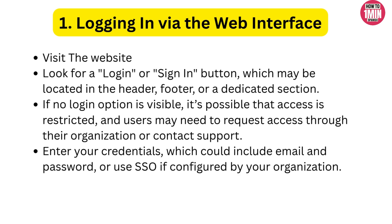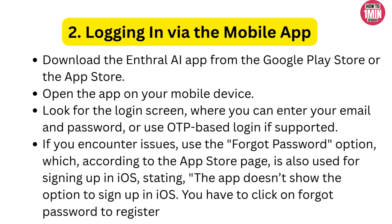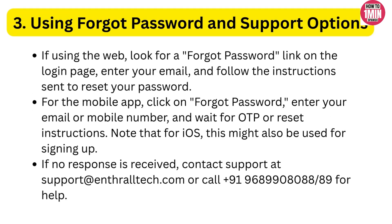Option two: use the mobile app. Download the Entral AI app from the Google Play Store or the App Store — links are in the description. Open the app, enter your email and password, or use an OTP-based login if available. If you are new, you might need to click 'forgot password' to sign up, especially on iOS — it's a quirky workaround, but it works.